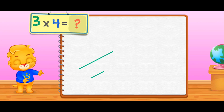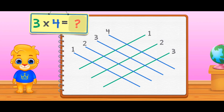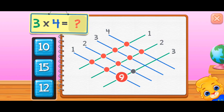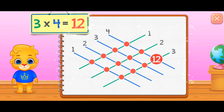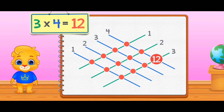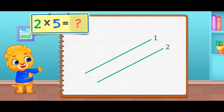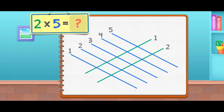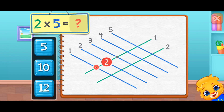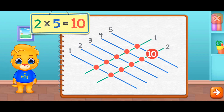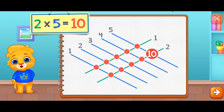Three times four equals — one, two, three, four, five, six, seven, eight, nine, ten, eleven, twelve. Two times five equals ten.